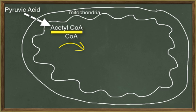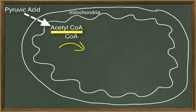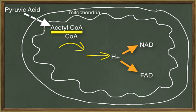An enzyme called coenzyme A, or CoA, will carry acetyl-CoA into the citric acid cycle in the matrix of the mitochondria. Recall that mitochondria are organelles with double membranes — that is, the mitochondria has two layers of membrane, the inner membrane and the outer membrane. The space between the inner and outer membrane is called the intermembrane space. The space inside the inner membrane is called the matrix. The citric acid cycle takes place in the matrix of the mitochondria, and its function is to remove hydrogen atoms from organic molecules and transfer them to coenzymes. These coenzymes are NAD and FAD.